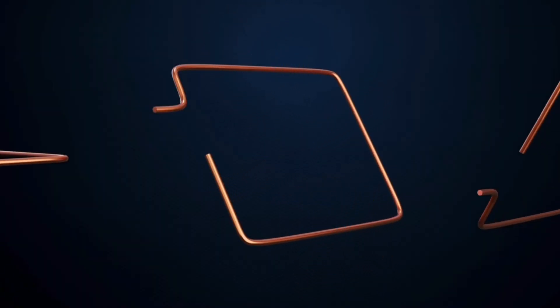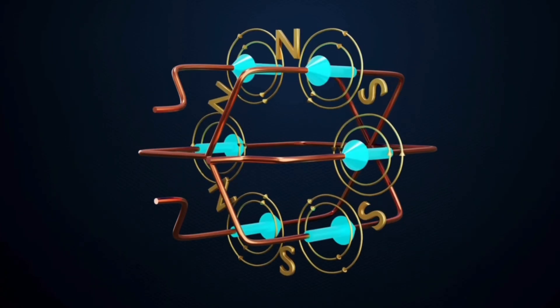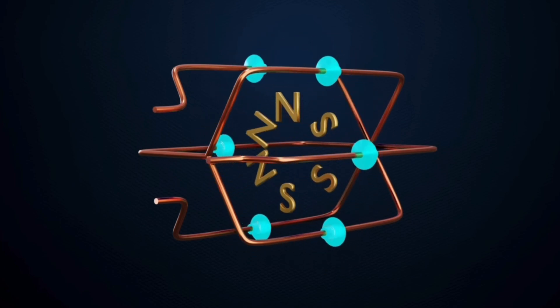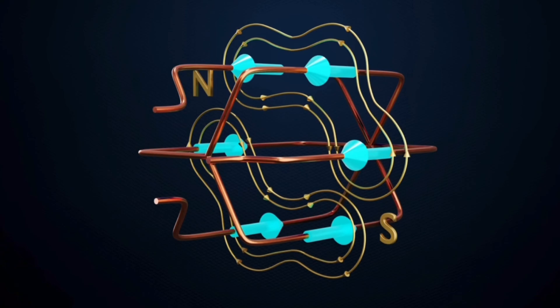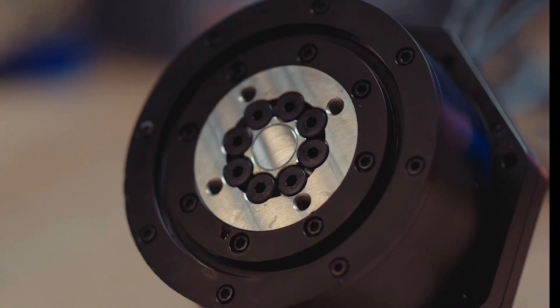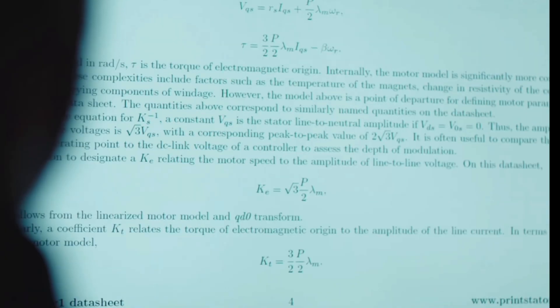The importance of windings and geometric design cannot be overstated. Windings, typically made of copper wires coiled around the motor's core, are crucial for generating magnetic fields when electrical current flows through them. However, it's not just the presence of windings that matters, but also how they're designed and distributed in relation to the geometry of the core and other motor parts.